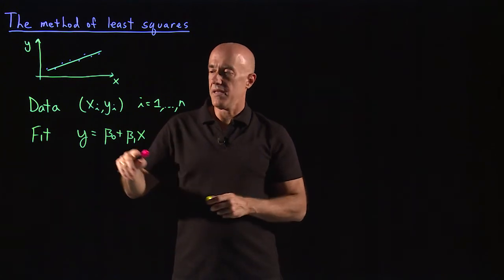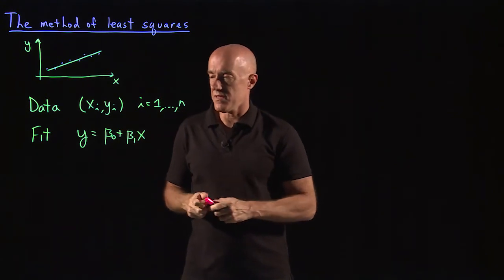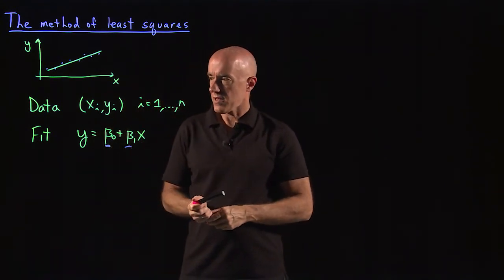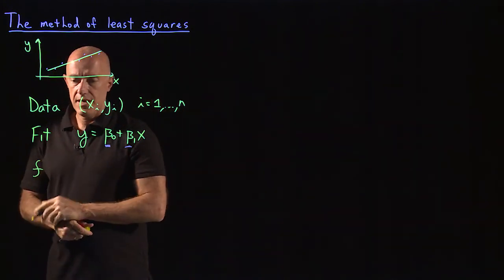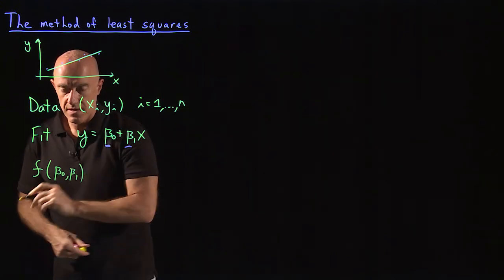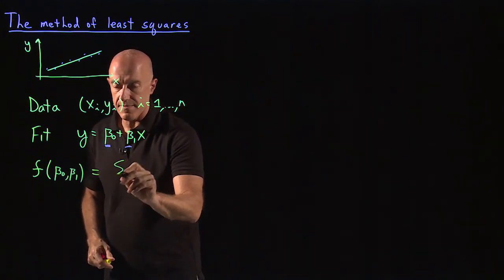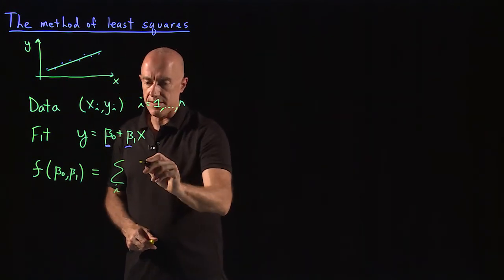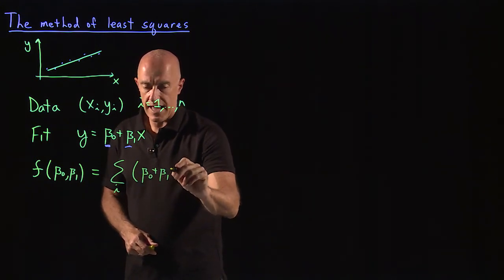So how do we find the optimum values of beta_0 and beta_1? These are the unknowns — the two fitting parameters. We construct a function F, which is a function of beta_0 and beta_1, the parameters we want to determine. This equals a sum over all the data: sum over i of the function beta_0 + beta_1 * x_i.